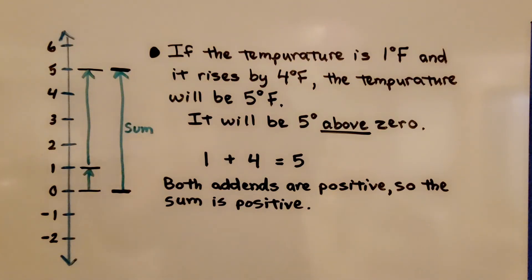If the temperature is one degree Fahrenheit and it rises by four degrees Fahrenheit, the temperature will be five degrees Fahrenheit. It will be five degrees above zero. One plus four is equal to five. Both addends are positive, so the sum is positive.